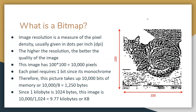Image resolution is a measure of the pixel density, and this is usually given in dots per inch or DPI. You may have seen this when downloading an image where you have to define how many dots per inch there are. The higher the resolution, the better the quality of the image. Here the image is 100 by 100 pixels, which makes 10,000 pixels in total.